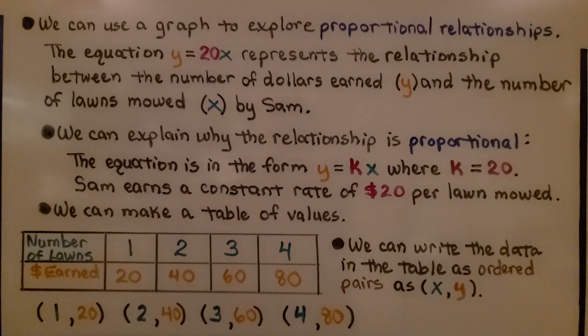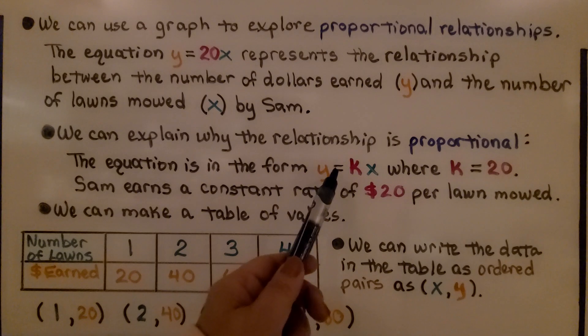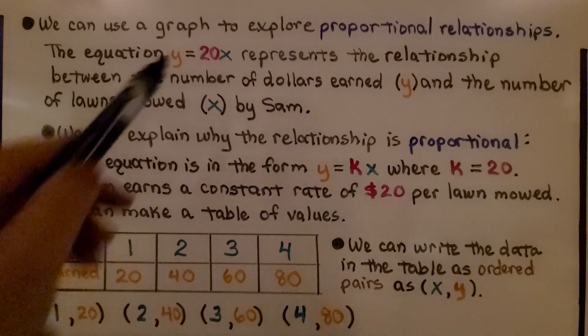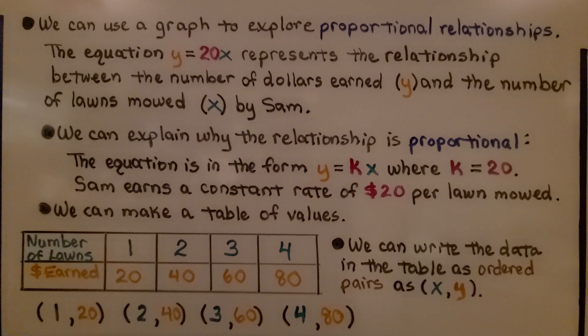We can use a graph to explore proportional relationships. The equation y=20x represents the relationship between the number of dollars earned (y) and the number of lawns mowed (x) by Sam. We can explain why the relationship is proportional. The equation is in the form y=kx, where k=20. We can make a table of values.